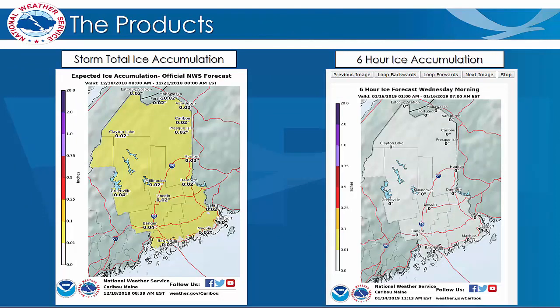Looking at the Ice Accumulation Forecast graphics, the Storm Total Ice Accumulation is very similar to most of our graphical forecast products. Two things to key in on: the valid time at the top of the graphic, which shows the total event time for the accumulation, and the issuance time located on the bottom of the graphic. There isn't too much difference between the Storm Total Ice Accumulation graphic and the 6-hour forecast graphic — the biggest difference is the loop controls, which allow the user to toggle through the different forecast times.